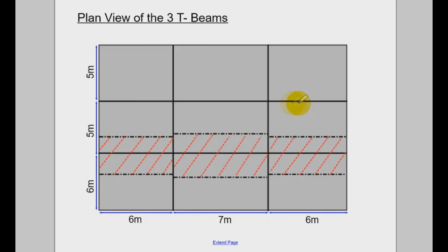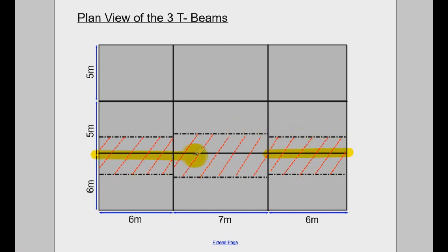If you view it on a plan view, this is the end span and this is another end span — they have the same flange breadth. And it is logical that you have something bigger for the interior span, since you have a bit of a larger span.